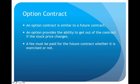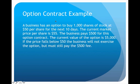If I don't want to sign a forward contract, another potential derivative is called an option contract. This is very similar to a futures contract, but the difference is I have the ability to get out of it if the underlying price changes — I can exercise my option to not carry it out. Pretty much the same example as before, except it's an option contract: the option to buy 1,000 shares of stock at $50 a share in 10 days, with a current market price of $55.